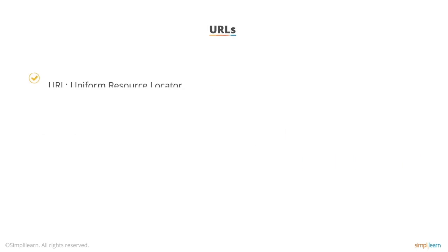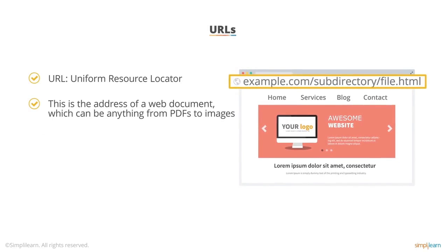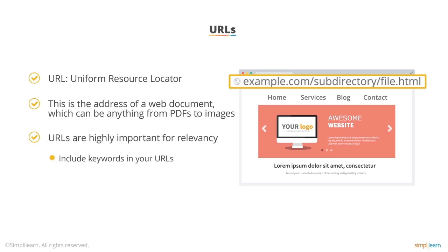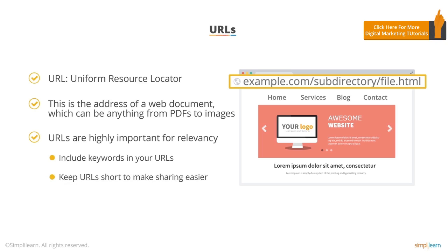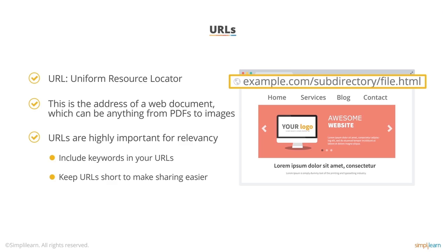Next up, we have URLs — Uniform Resource Locators. These are the addresses of web documents online. Just like a street address for your house, on the internet we have URLs for any given document — PDFs, images, text, your homepage — all of these have URLs. These are extremely important for SEO. The most important factor is keyword usage: make sure the words you're trying to rank for are included in your URLs. The second part ties directly to the first: keep these short. Humans share URLs, say them over the phone, and type them in browsers, so it's extremely important to keep them short and succinct.